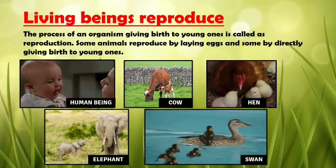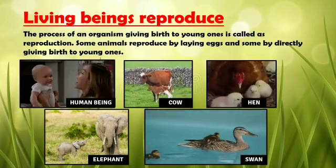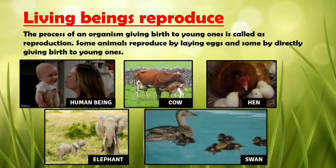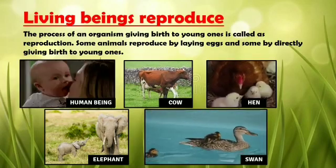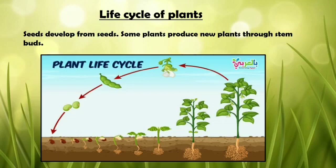Living beings reproduce. The process of an organism giving birth to young ones is called reproduction. For example, a cow directly gives birth to young ones, but a hen lays eggs and those eggs hatch after a few days. For plants, seeds develop from seeds. Some plants produce new plants through stem buds. The plant starts life as a seed, which germinates and grows into a plant. The mature plant produces flowers, which produce seeds. These seeds can be planted. This is the life cycle of a plant.